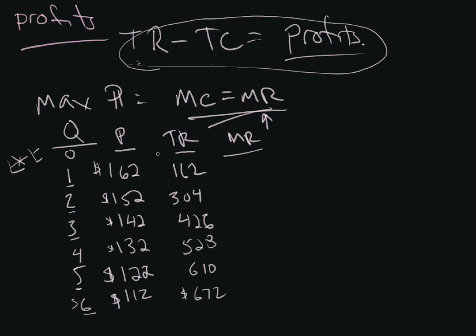Going from zero to one, our marginal revenue is $162. Going from one to two, how much more revenue do we get if we increase our production by one? Is it $304? No, that's the total revenue. It's this difference here. The difference between $304 and $162 is $142. That's the marginal revenue of producing the second unit. How about the marginal revenue of producing the third unit? It's $426 subtract $304, and you get $122.